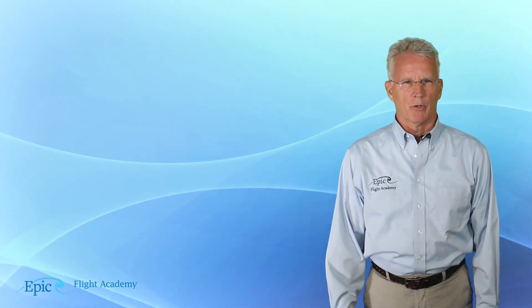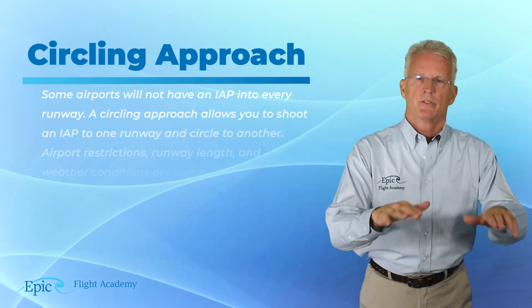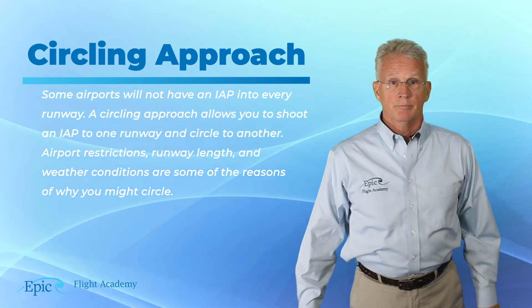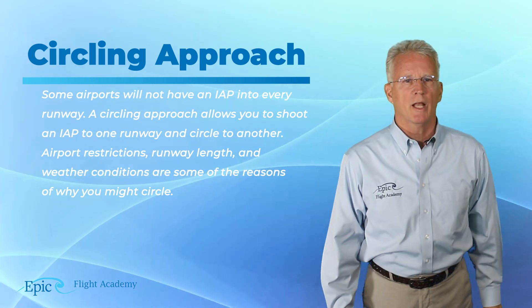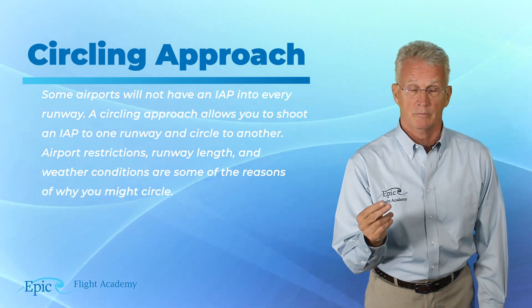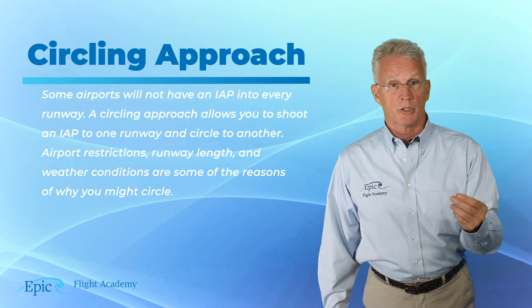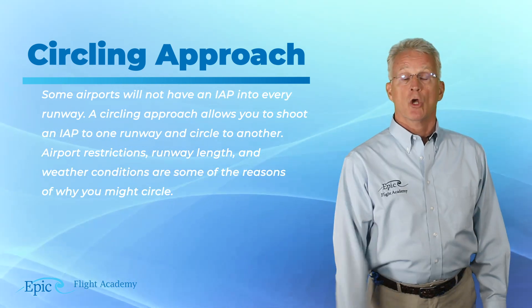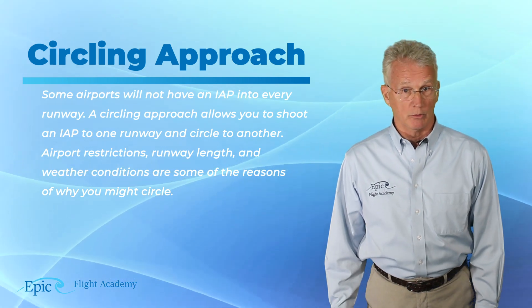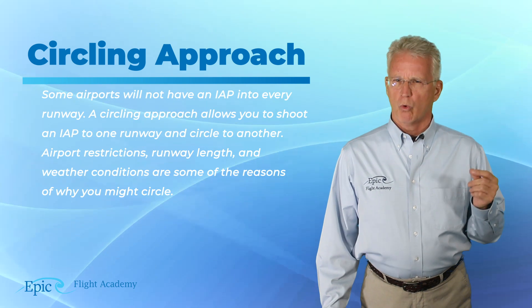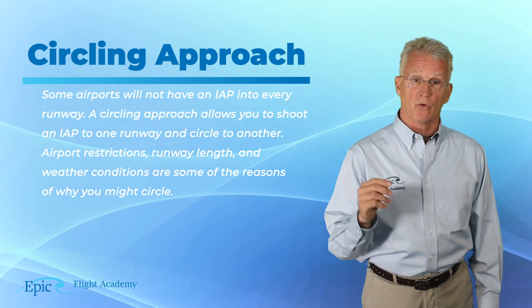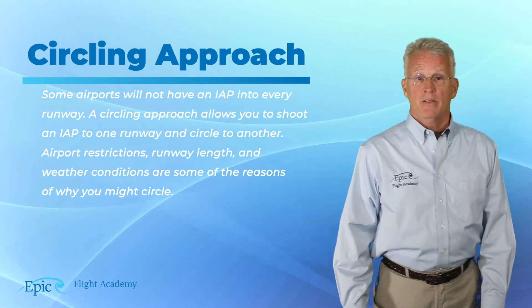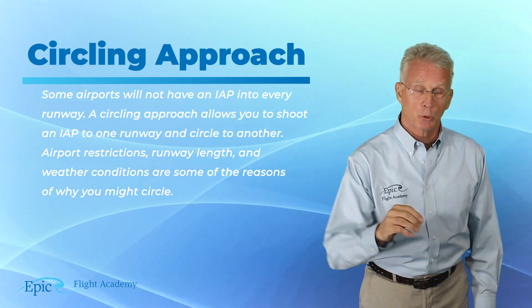Now what about this circling approach? You may come into this airport using an instrument approach procedure but want to land on another runway. A circling approach allows you to shoot an instrument approach procedure to one runway and circle to another. Now airport restrictions, runway length, and weather conditions are some of the reasons why a pilot might choose to circle. A circling approach requires the pilot maintain a specific radius from each runway approach end, dependent upon the category that the aircraft operates the approach within.